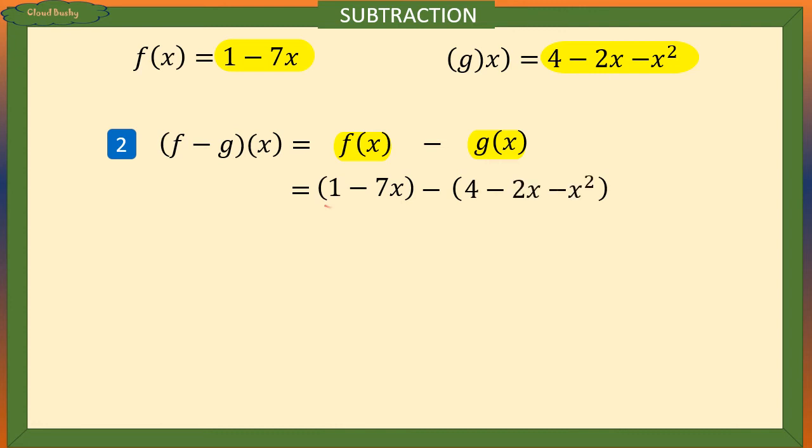So we have 1 minus 7x minus 4 minus 2x minus x squared.